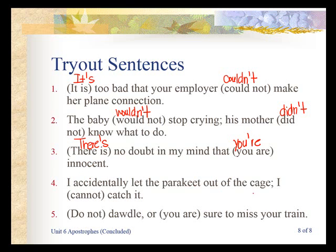'I accidentally let the parakeet out of its cage. I cannot catch it.' Cannot is one word, so to make it a contraction: C-A-N, we drop the N and the O, apostrophe, T — 'can't.' 'Do not' becomes 'don't' — D-O-N, drop the O, apostrophe, T. 'You are sure to miss the train' — Y-O-U, drop the A, apostrophe, R-E — 'you're sure to miss the train.'